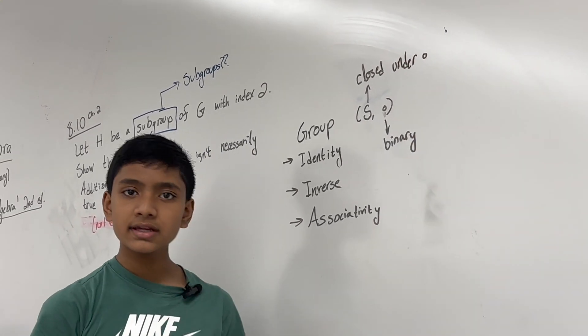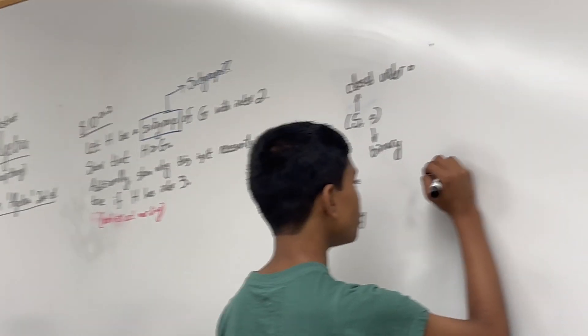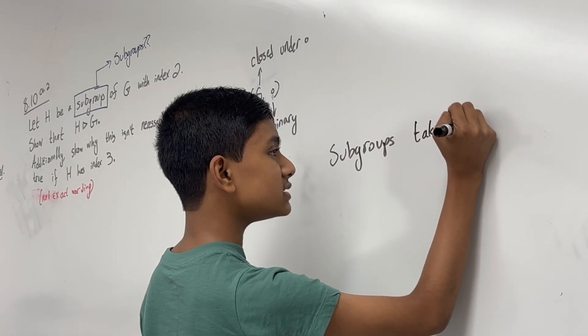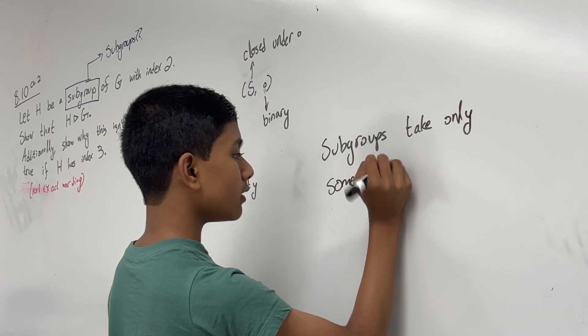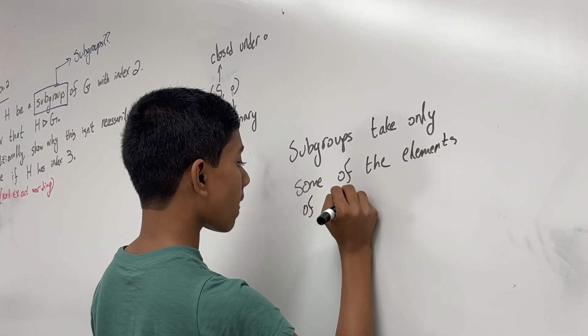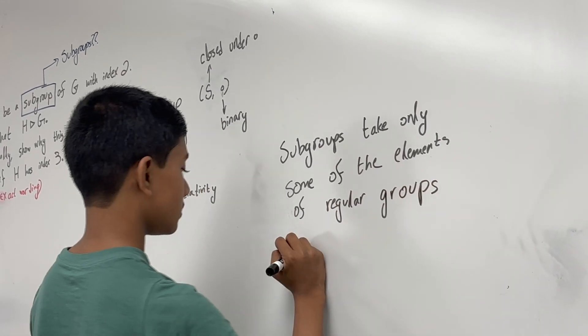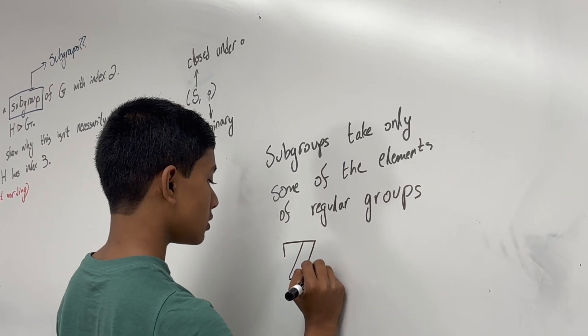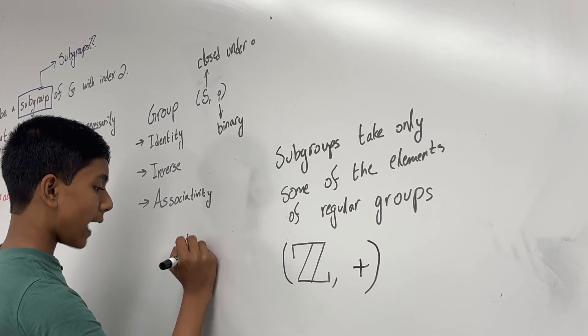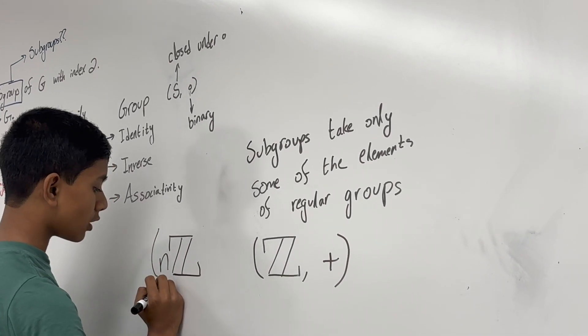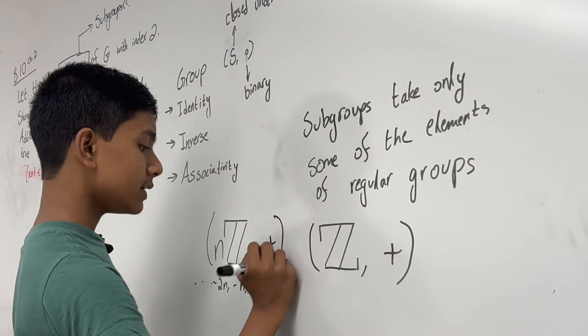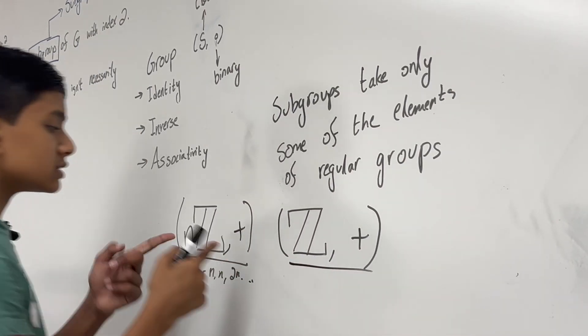It's natural that these rules also apply to subgroups. The only difference is that subgroups take only some of the elements of regular groups. For example, the integers over addition, and the nth multiple of the integers, which is essentially all the numbers that are minus 2n, minus n, n, 2n, etc., going both ways, over addition.